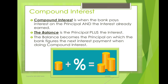The next term is compound interest. Compound interest is when the bank pays interest on the principal and the interest already earned. In simple interest, it depends only on the principal. But compound interest depends on both the principal and the interest already earned.